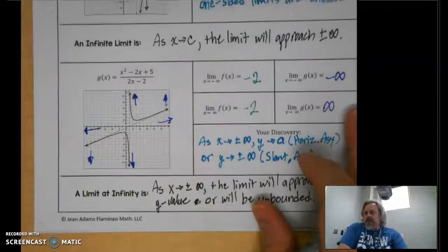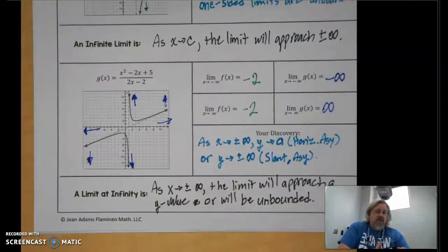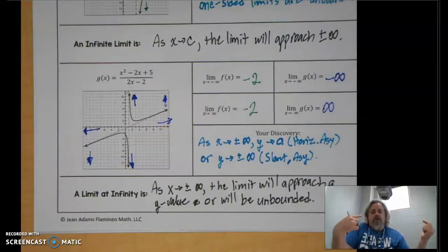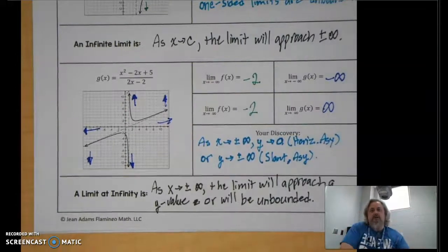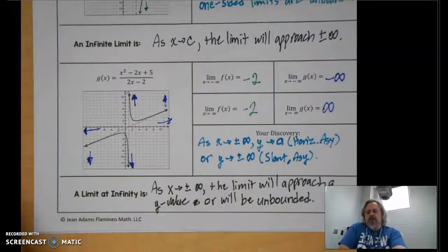We're coming up on about 12 minutes, so I'm going to pause this video and pick it up in a second part shortly. That's essentially the gist of how functions behave as they approach infinity going left or right, or how a function will approach infinity using one-sided limits. That's the difference between infinite limits and limits at infinity. We'll pick it up in the next video — thanks for watching, take care.